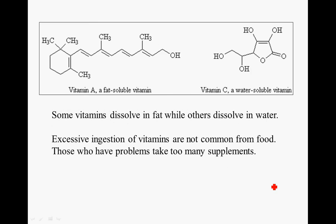There are two types of vitamins: fat soluble, like Vitamin A, and water soluble, like Vitamin C. It is important to get both types, but it is also important not to overdo it with the fat soluble vitamins. Fat soluble vitamins can be stored in your body, and if you ingest too much, you can actually have adverse effects. Water soluble vitamins, however, are excreted from your body on a regular basis, so these are less of a threat. Excessive ingestion of vitamins from food is not common; those who have problems take too many supplements.